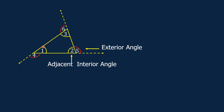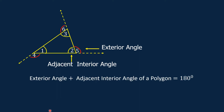Also, angle 1 and angle 4 form a linear pair, and they are supplementary. Since an exterior angle of a polygon and an adjacent interior angle of the same polygon are supplementary, therefore, exterior angle plus adjacent interior angle of a polygon is equal to 180 degrees.